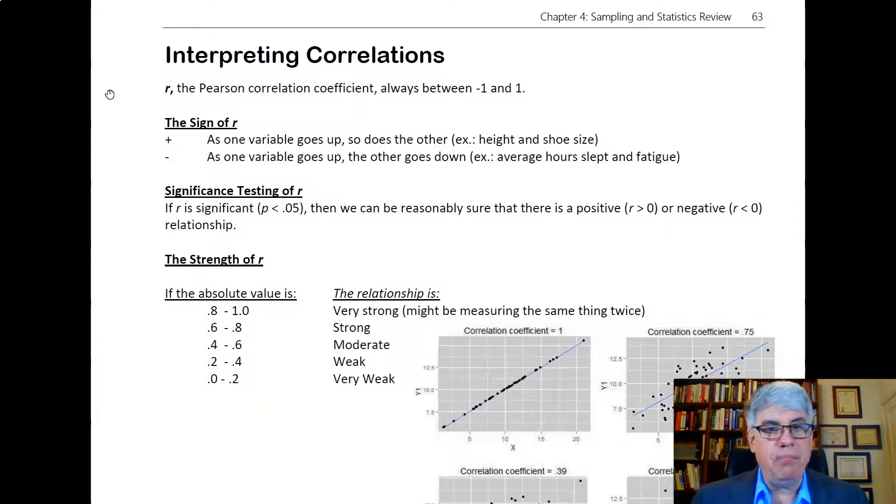There's a couple main parts of the correlation. There's the sign of r, which is going to be either positive or negative, and then there's the strength of r.